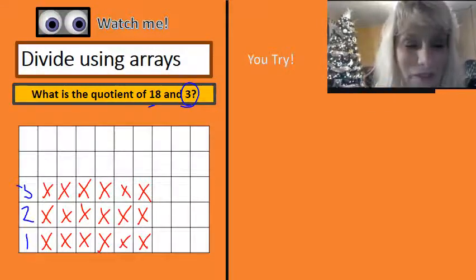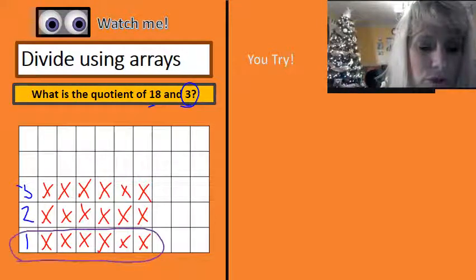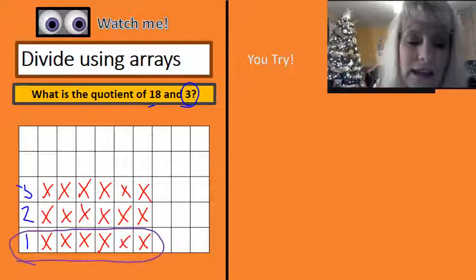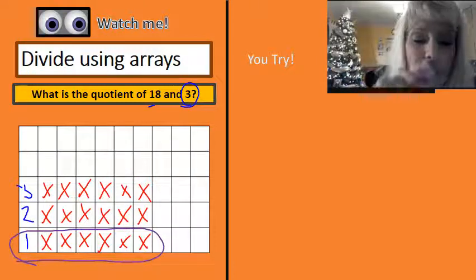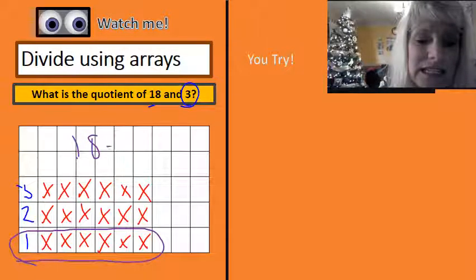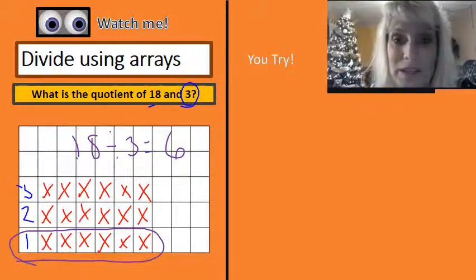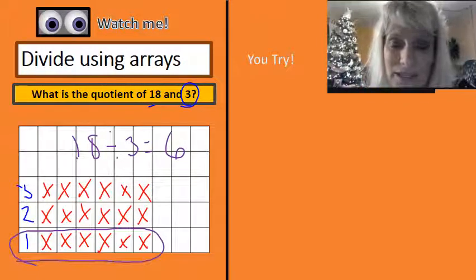The cool thing about this is I can go into one of these rows, and I count — I've got six. So what that tells me is that 18 divided by three equals six. And the reason that works is because six times three equals 18.